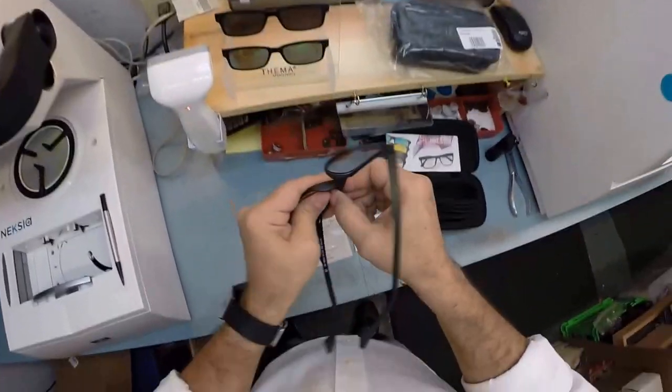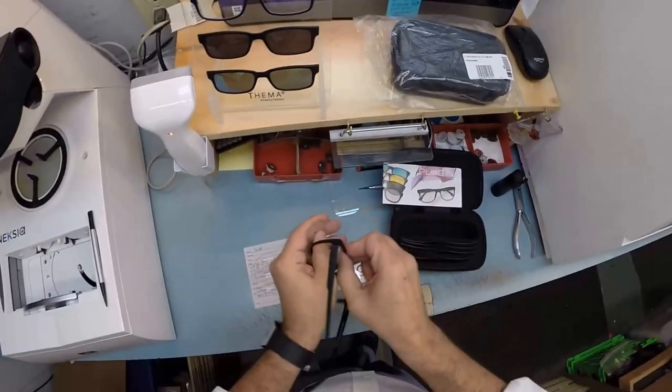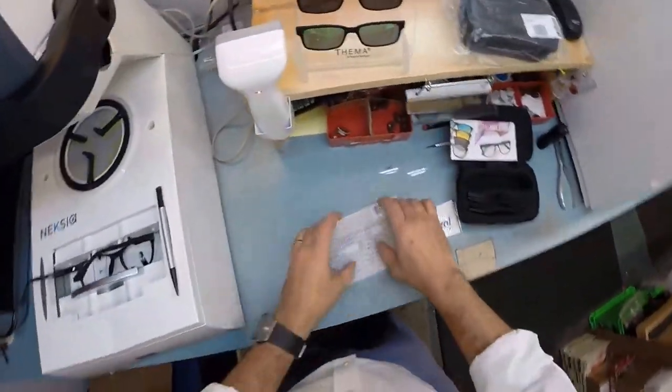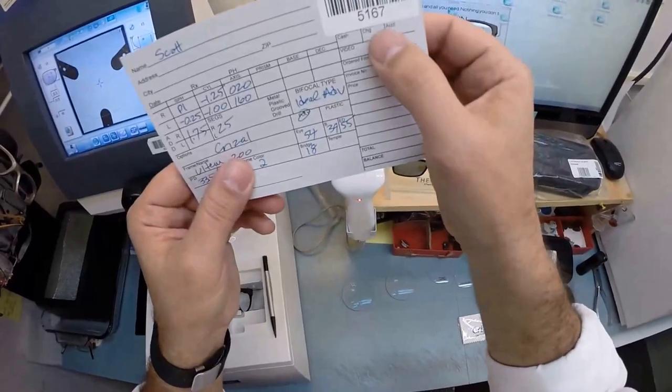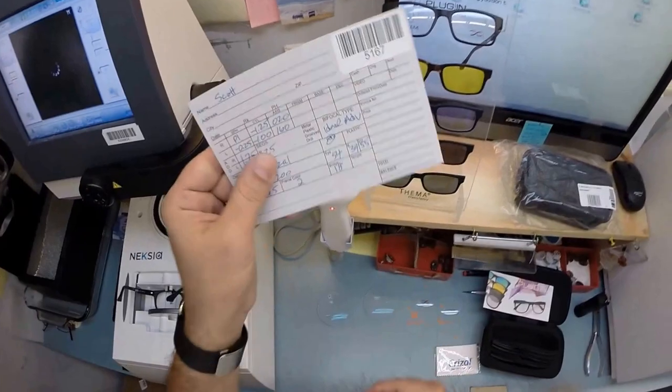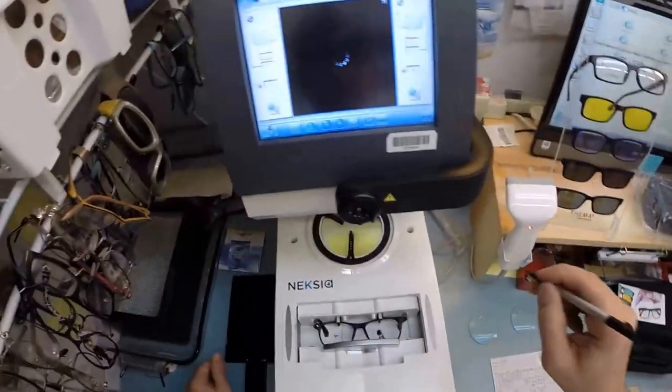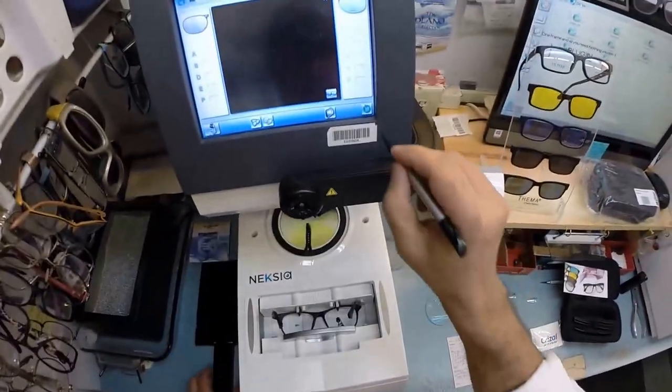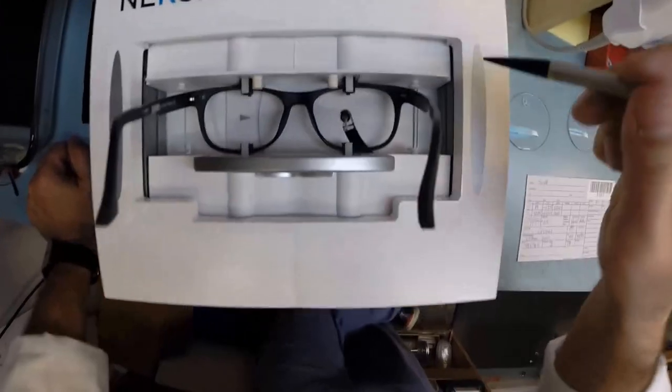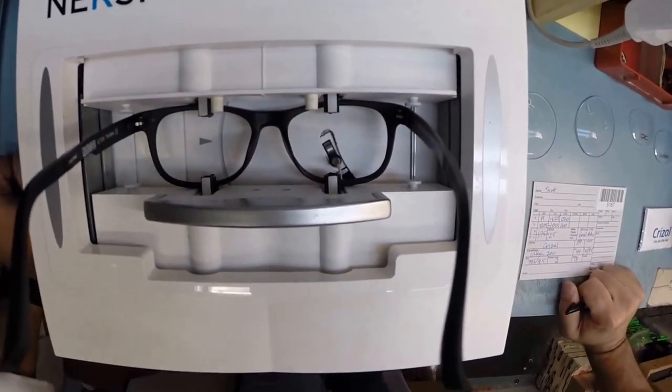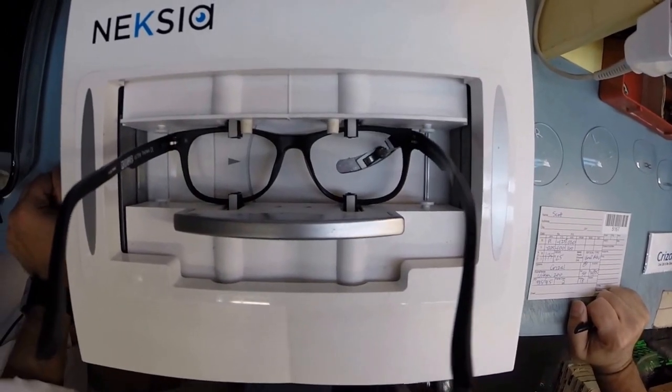I'm going to pop out the original demo lenses and put the frame into the tracing element of my edger. Scott, you will be known as Secret Agent 5167. I am going to program the shape into the computer. Years from now, should you ever need new lenses, I can just pull up that shape 5167 and cut new lenses for it.